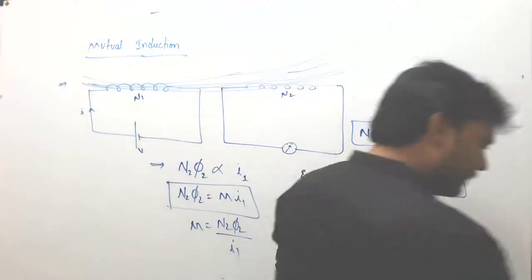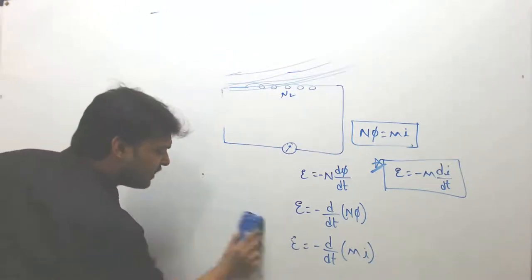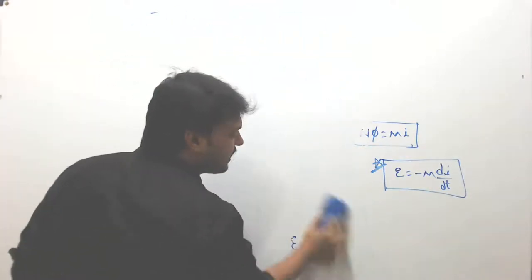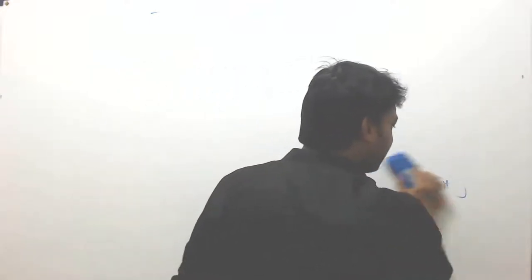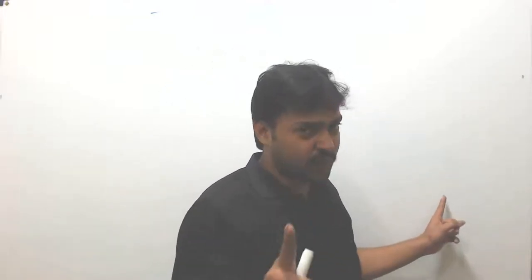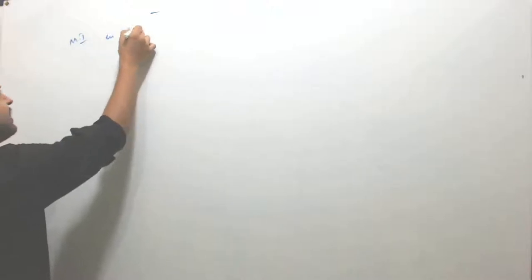The unit of mutual inductance is Henry — the same as self-inductance. Both L and M are measured in Henry. When di/dt equals one, the magnitude of induced EMF equals the value of self-inductance or mutual inductance. So e = M di/dt and e = L di/dt.